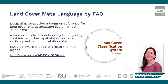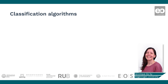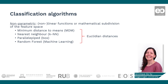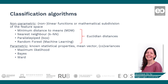Let's now have a look at the different types of supervised classification algorithms. Non-parametric algorithms such as minimum distance to the means and nearest neighbor are based on Euclidean distances in the feature space. Parametric algorithms such as maximum likelihood are based on statistical distances within the feature space. I will now show a few examples of supervised classification algorithms, each using a different definition of distance in the feature space.